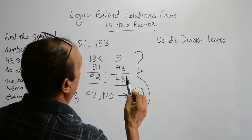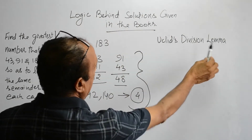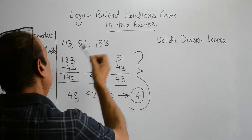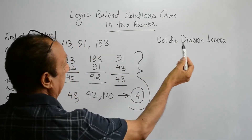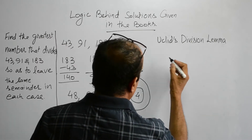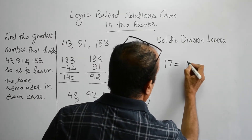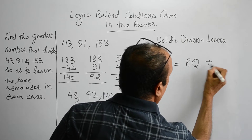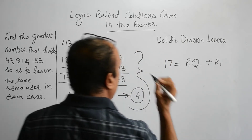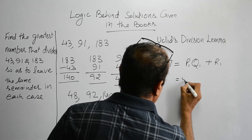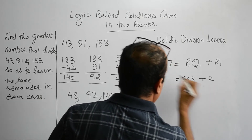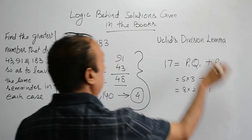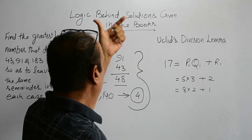We are going to take the help of Euclid's division lemma in order to find out the logic behind all these calculations. Euclid's division lemma says that any number can be written in the form of P·Q + R. For example, 17 can be written as 5 into 3 plus 2, and it can also be written as 8 into 2 plus 1. So we are going to use this lemma to find out the logic.